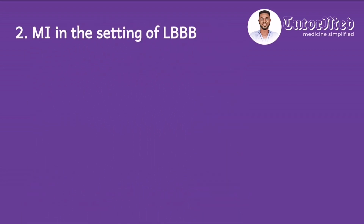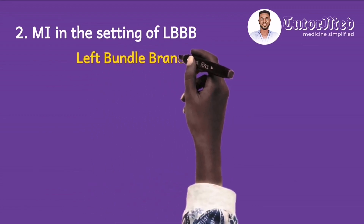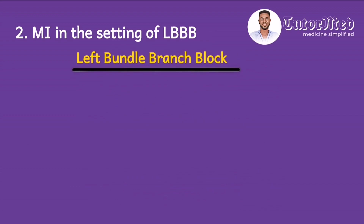When interpreting the ECG of a patient with suspected STEMI, one of the things that masks or makes the diagnosis very difficult is the presence of a left bundle branch block. The other is ventricular pacing, but let's focus on the left bundle branch block. There are about five ways to detect this on the ECG, but we will focus on two simple ones.